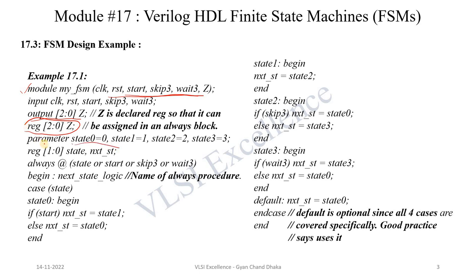To define the states we use parameters: state 0 equals 0, state 1 equals 1, state 2 equals 2, and state 3 equals 3. We also declare two internal register type variables, state and next_state, which are 2-bit wide to represent one of the four states — at least 2 bits are needed to represent four states.